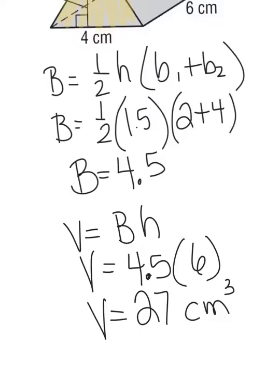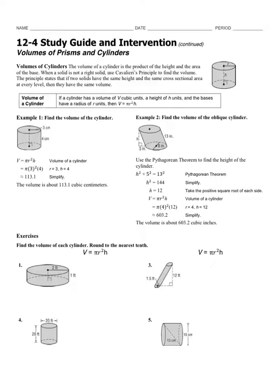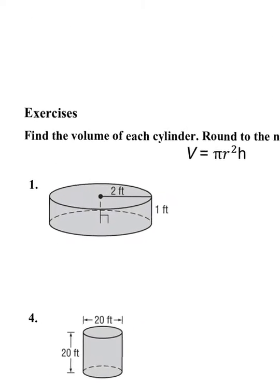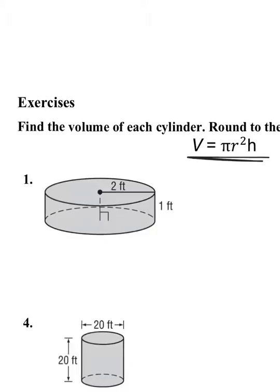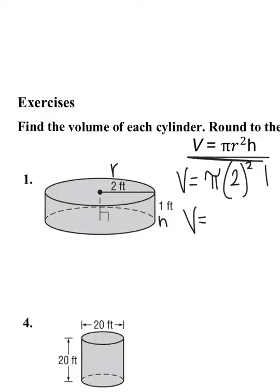Now we're moving on to volume of a cylinder. For a cylinder, volume equals pi r squared times height — that's the area of the base times the height. All I need is the radius and height. For this problem, the radius is 2 and the height is 1. Volume equals pi times 2 squared times 1. Rounding to the nearest tenth, the volume is 12.6 feet cubed.